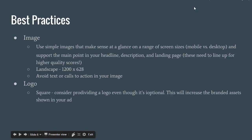Let's go over some of the best practices from Google. The first is regarding images: they recommend using simple images that make sense at a glance on a range of screen sizes — for mobile and desktop — which is important because some people are looking on a massive monitor at their desk while others are on a tiny cell phone screen. They say to use the image to support the main point in your headline, description, and landing page.